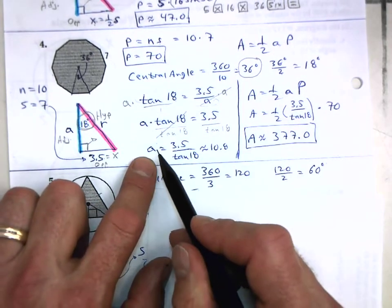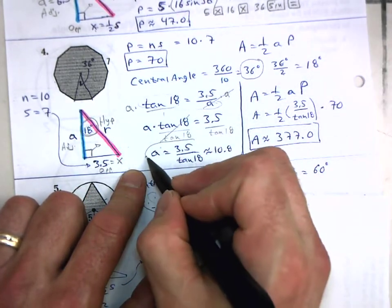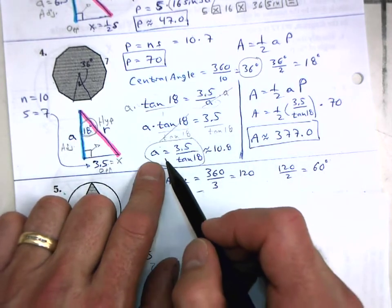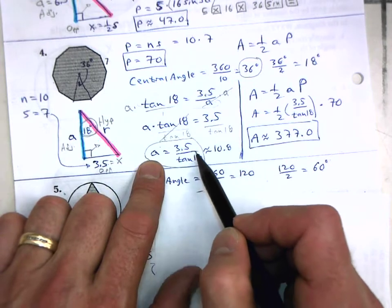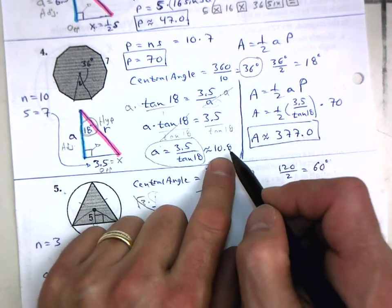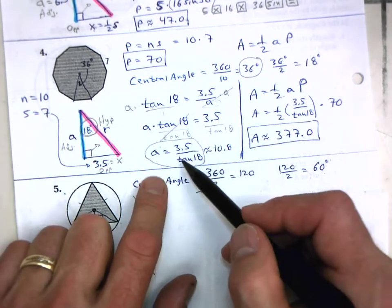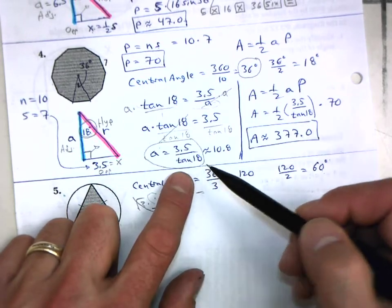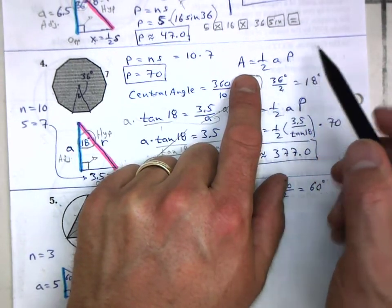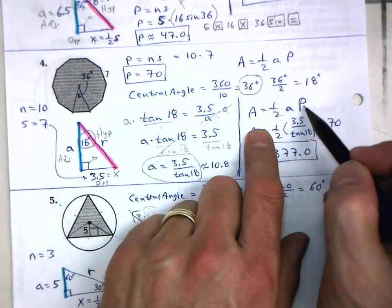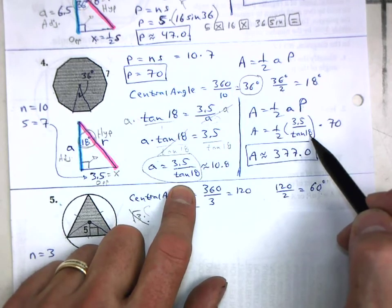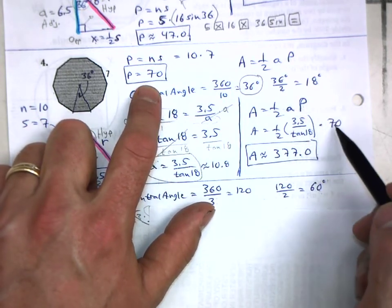So there is my apothem: A equals 3.5 divided by tangent(18). If I calculated that, I'd get approximately 10.8 — but don't calculate it yet. Keep it as the exact expression. Now here's the formula: area equals one-half times the apothem times the perimeter. I know the apothem is 3.5 divided by tangent(18), and the perimeter is 70.